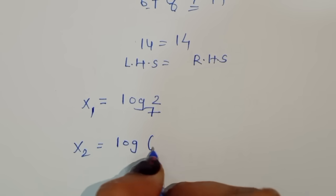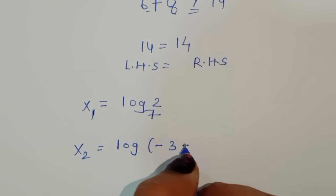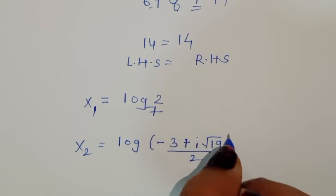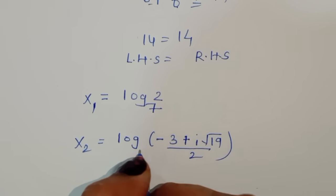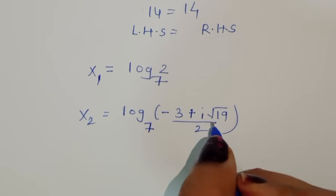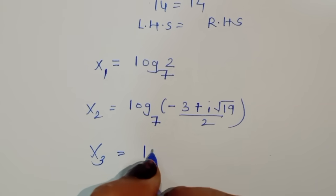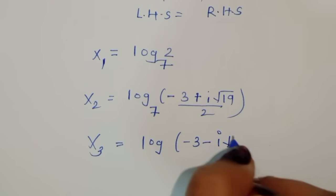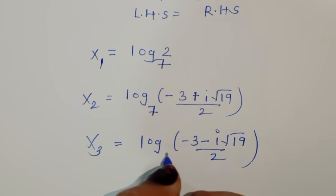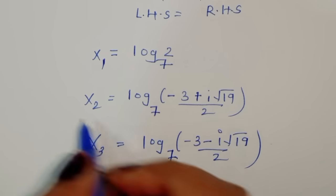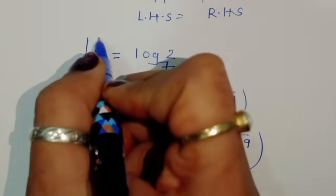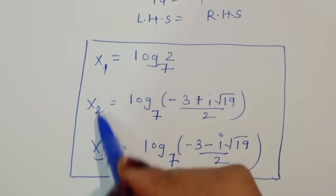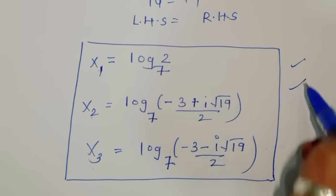So this equation has three solutions: x₁ = log₇(2), x₂ = log base 7 of ((−3 + i√19) / 2) which is an imaginary solution, and x₃ = log base 7 of ((−3 − i√19) / 2) which is also imaginary. Thank you.